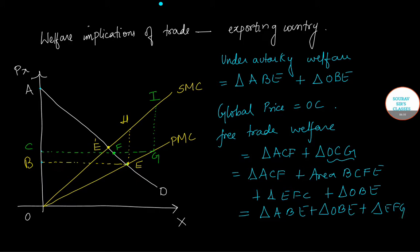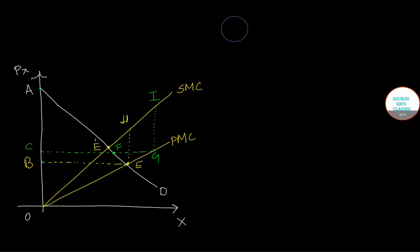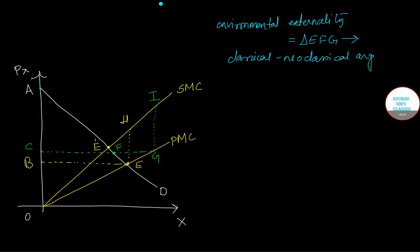Now in absence of any environmental externalities, what will be the gains from trade? It will be given by triangle EFG. This is the classical neoclassical argument that is there for free trade. Now what we will do is depart from the neoclassical world and come closer to reality by making the assumption that environmental damage is taken into consideration.